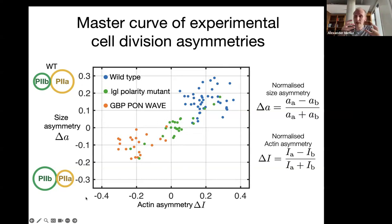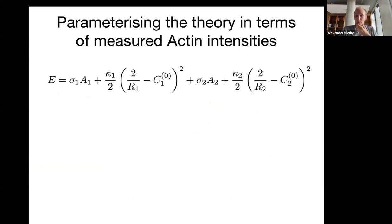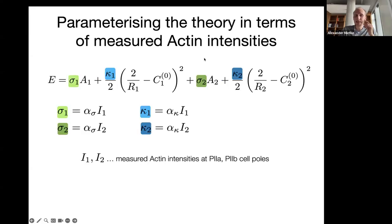You do indeed see cells that divide symmetrically. On the y-axis here, we have now a measure of size asymmetry. On the x-axis, we have a measure of the actin asymmetry. There's a very nice trend of how these things are correlated with each other. The final task was now mapping this data to the theory we had together with the actin intensity observations that were made in experiments. The way we did this is to say that the tensions, as well as the bending rigidities, are directly proportional to the measured actin intensities that we see in the relative cortices.